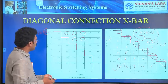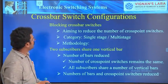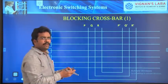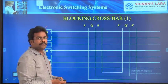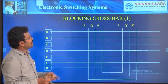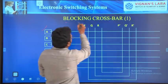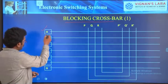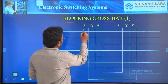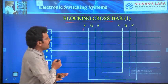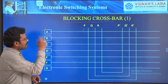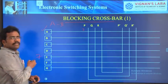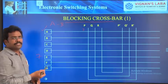The third method is: keeping the inlets the same but reducing the vertical bars, we can improve the efficiency. I am going to show here — this comes under the blocking network. For seven subscribers, I am going to use only three vertical bars. But how to establish the connection? My objective is to establish a connection between A to B. In this case, you have to follow some procedure.